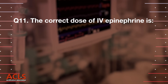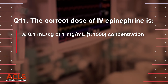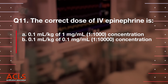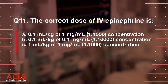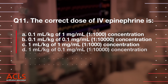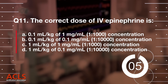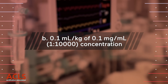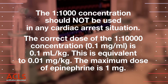Question 11: The correct dose of IV epinephrine is: A) 0.1 mL/kg of 1 mg/mL (1:1,000 concentration), or B) 0.1 mL/kg of 0.1 mg/mL (1:10,000 concentration). Correct answer: B) 0.1 mL/kg of 0.1 mg/mL (1:10,000 concentration). The 1:1,000 concentration should not be used in any cardiac arrest situation.